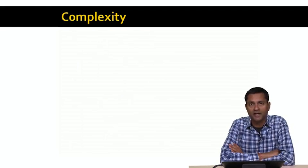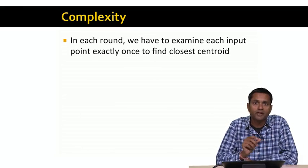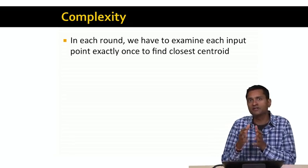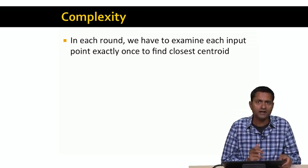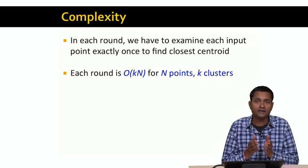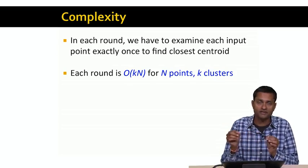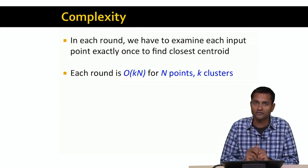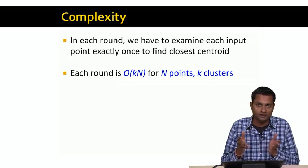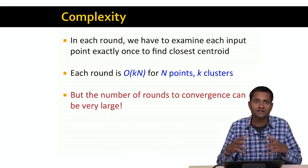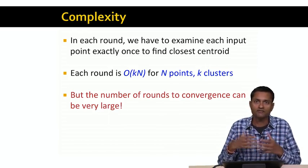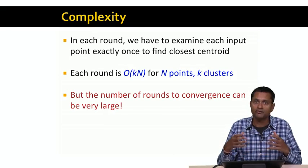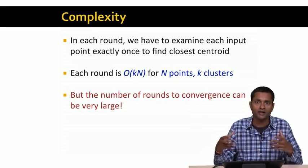Let's consider the complexity of k-means clustering. In each round, we examine each input point exactly once, find the closest centroid, and assign the point to it. Since there are n points and k centroids, we compute the distance of each point from each centroid, so each round is O(k × n). When n is really large and k is fairly small, we have a linear algorithm in n. The real problem is that the number of rounds to convergence can be really large — there is no theoretical limit on the number of rounds to converge, so the algorithm could spend a really long time getting to convergence.